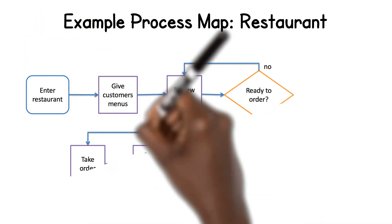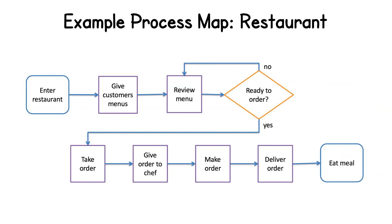Now, let's take a look at a simple example of a restaurant's process. The process starts by entering a restaurant, giving the customer's menus, reviewing the menu, and then we get to the decision point: ready to order. If the customer is ready to order, the order will be taken, given to the chef, prepared, delivered, and the process ends with the customer eating the meal.